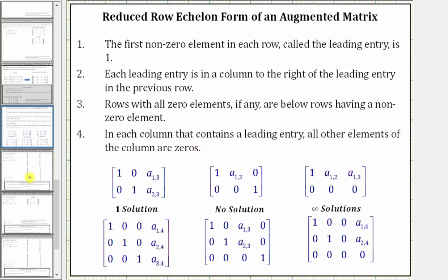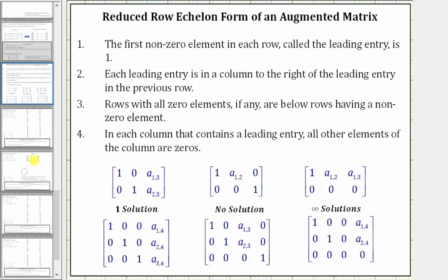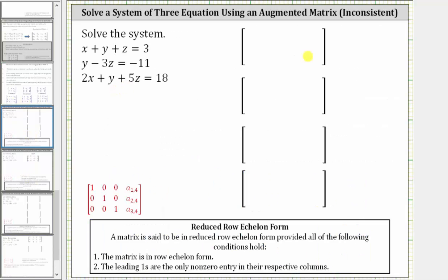And finally, in each column that contains a leading entry or one, all other elements of the column are zeros. So going back to our example, let's first write the augmented matrix, looking at the first equation. Because the coefficient of x is one, the coefficient of y is one, the coefficient of z is one, and the constant is three, the first row is one, one, one, three.